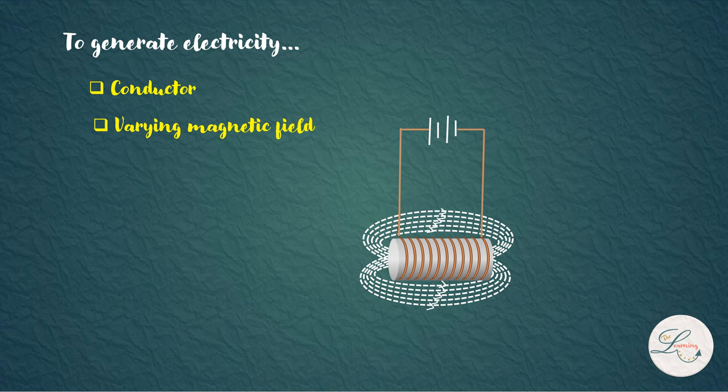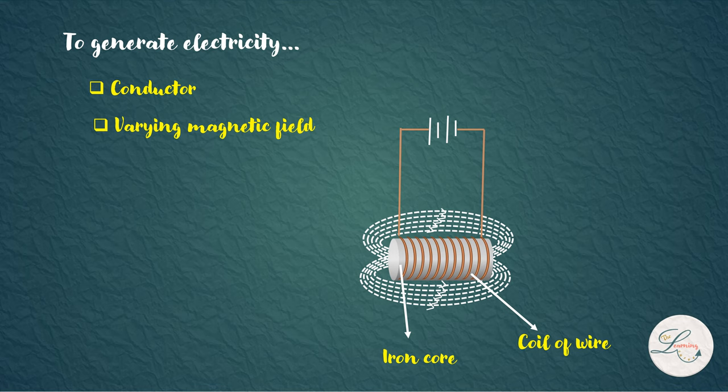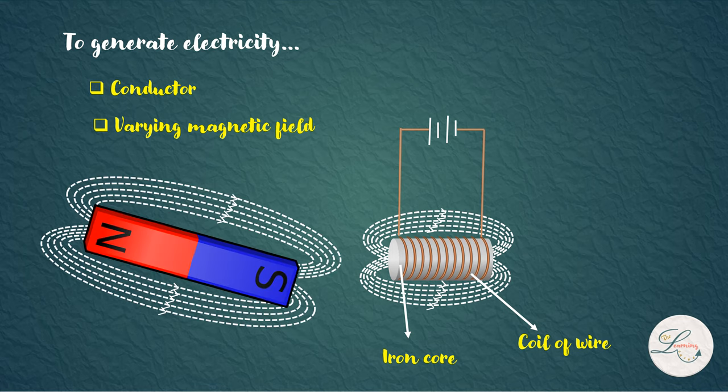The electromagnet consists of a coil of wire wrapped around an iron core. The magnetic field is created when a current flows through the coil, and it loses its magnetic properties when no current flows through it. The field of the electromagnet is similar to the field of a bar magnet. The coil has a north pole at one end and a south pole at the other. Now let's see a simple illustration of generating electricity.